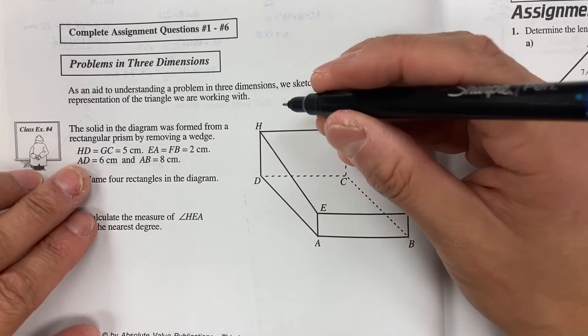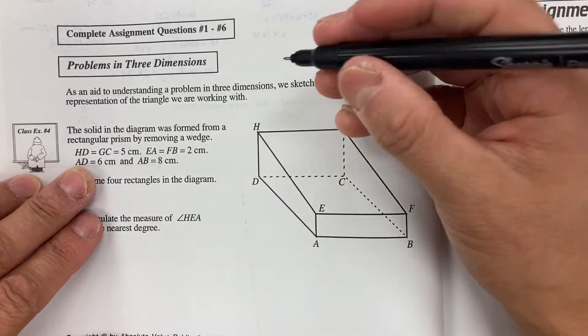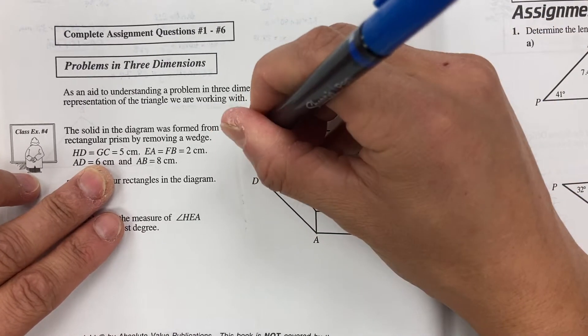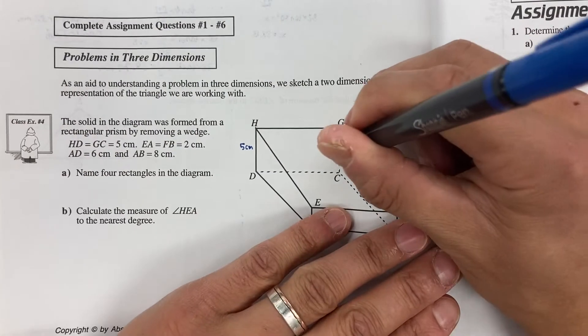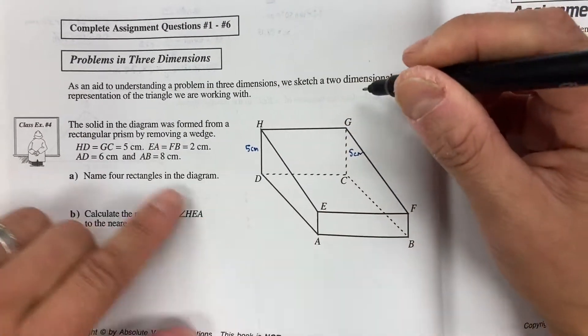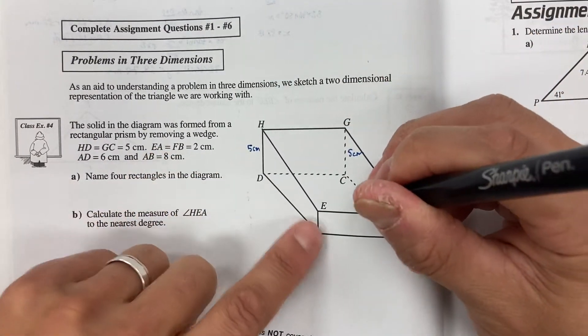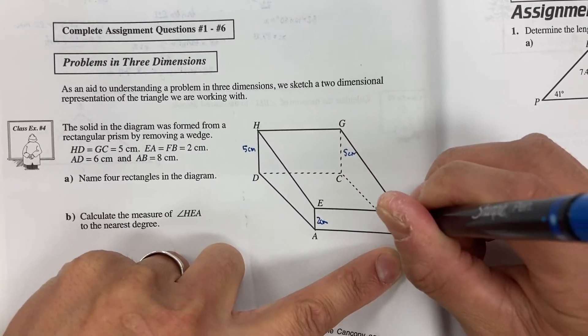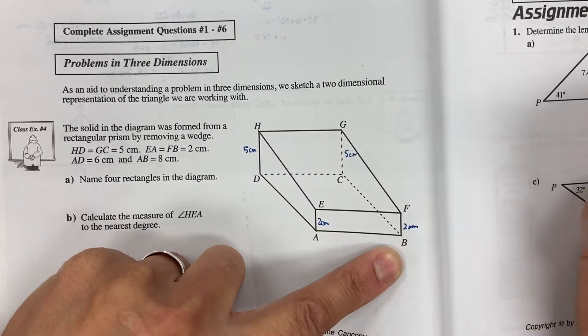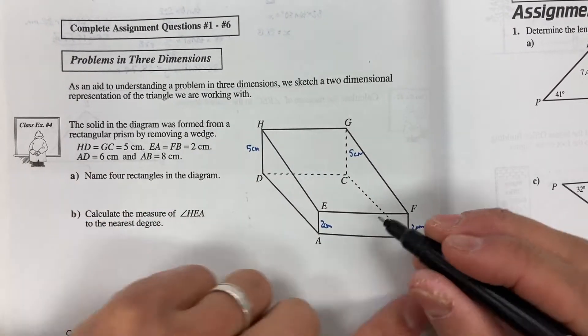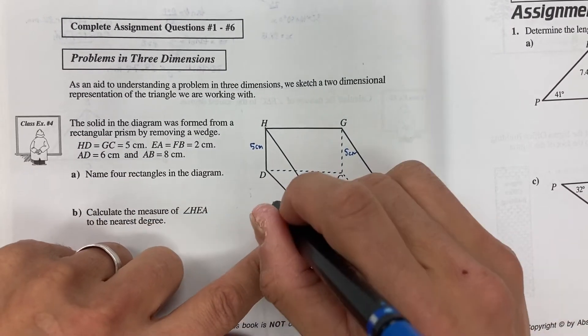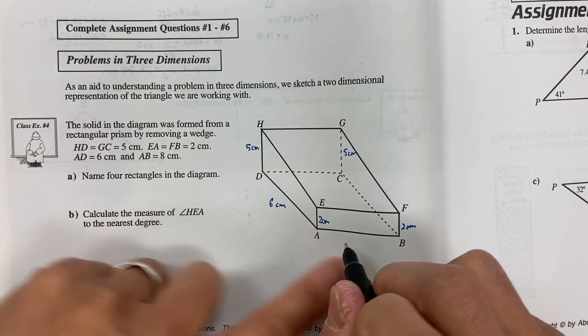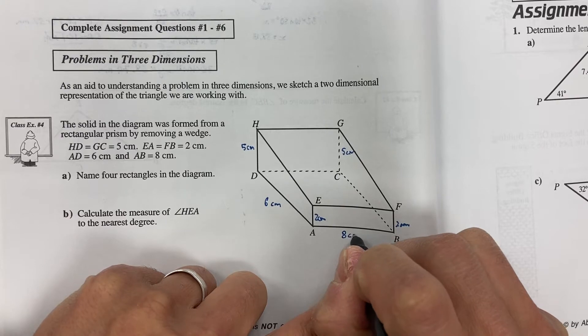First of all let's begin by labeling our diagram. HD is equal to GC, and they're both five centimeters in length. So five centimeters. EA is equal to FB, and these are both two centimeters. Sorry I keep bumping my stand here. And then I have AD which is six centimeters and AB which is eight centimeters.